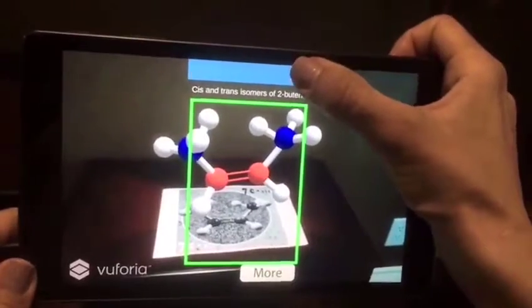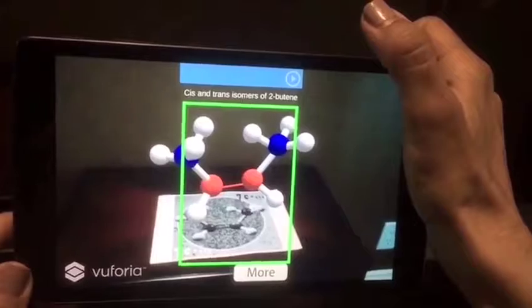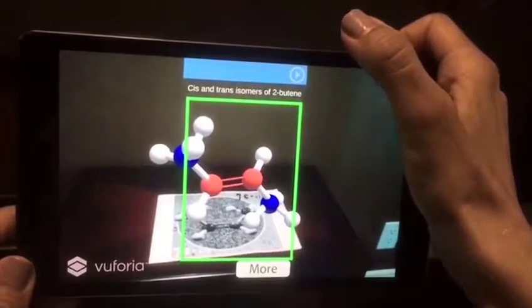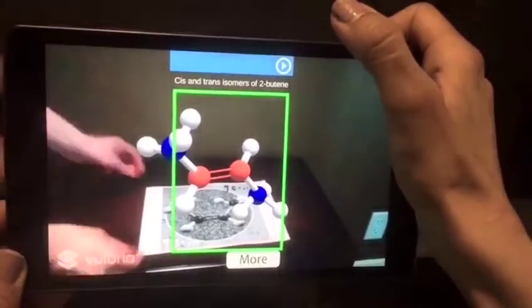Finally, this shows the cis and trans isomers of 2-butene and how they can be transformed upon breakage of the pi bond and rotation around the carbon-carbon bond.